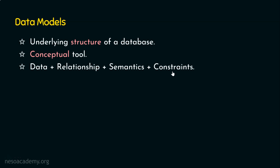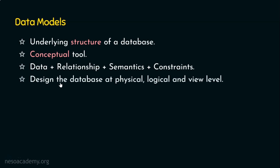This data model is actually acting as a conceptual tool that describes the data, the data relationship, the data semantics and the data constraints. So obviously we need to design the database at the physical level, logical level, and the view level. Databases use three-tier architecture, so we need to look into the database from a design perspective at three levels: one, the physical level; two, the logical level; three, the view level.